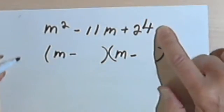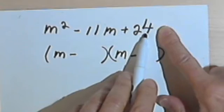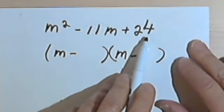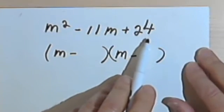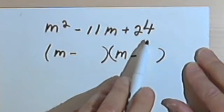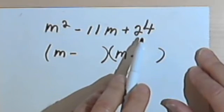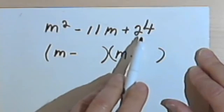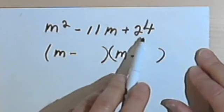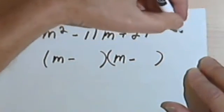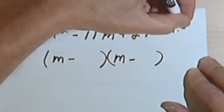Next step is to actually look at the constant at the end of the original problem, the polynomial. That's a 24. So I want to think of all the different ways that I can make 24 with two numbers. In other words, what are the different factors of 24?